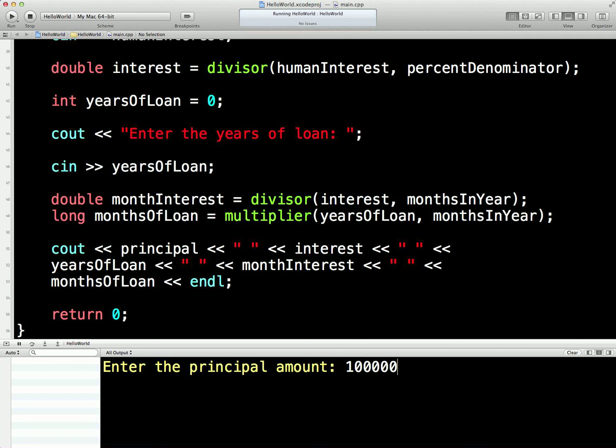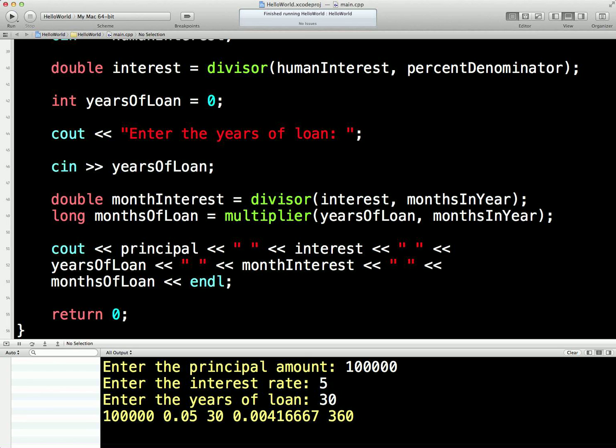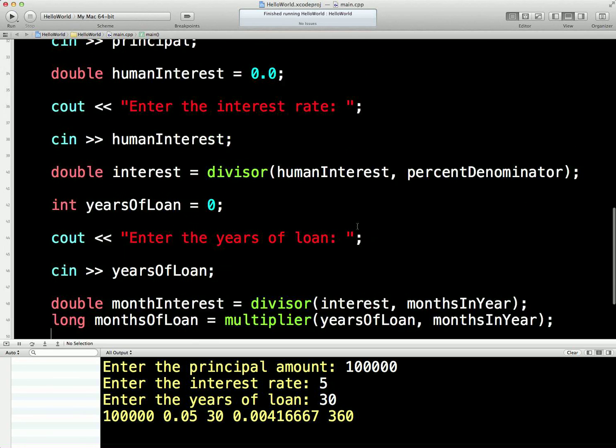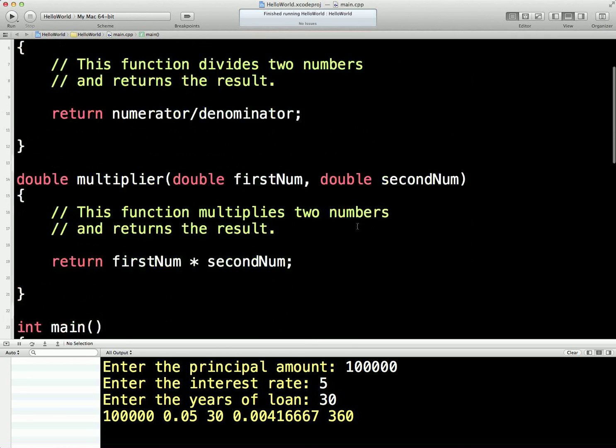Let's go for our original 100,000 because we're familiar with those numbers. Interest rate, let's make it five because again we're familiar with those numbers. Notice we're not putting 0.05 in now. Years of loan, 30. Return. Super. So we're getting out 0.05 rather than five. We're dividing that successfully to 0.4% per month, which is this monthly interest figure here. And we're getting the expected 12 times 30 to get 360 there using our multiplier function.